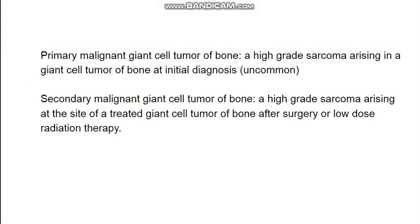Giant cell tumor is benign, but malignancy can occur in two forms: primary and secondary. Primary malignancy is very uncommon and involves a high-grade sarcoma developing within the giant cell tumor, arising mostly from the mononuclear cell population. Secondary malignancy occurs after treatment — following surgery or low-dose radiation therapy — when a high-grade sarcoma subsequently develops.